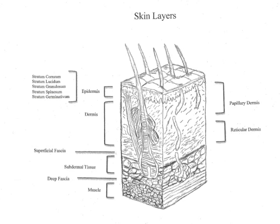The skin is the largest organ in the human body. It has two layers: a thin, cellular epidermis derived from ectoderm, which overlies a thicker dermis made up primarily of extracellular matrix and derived from mesoderm.